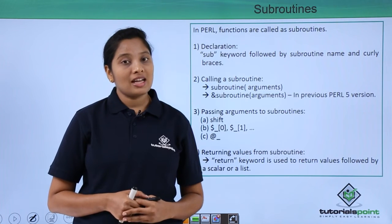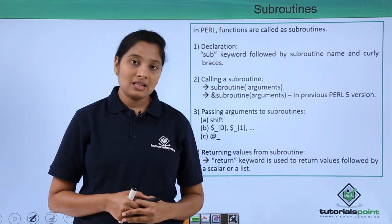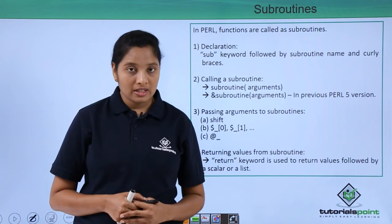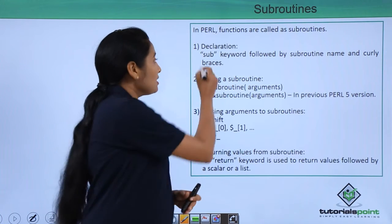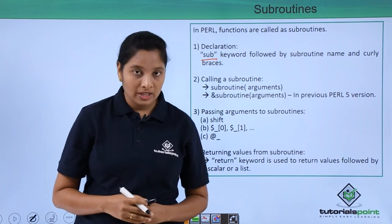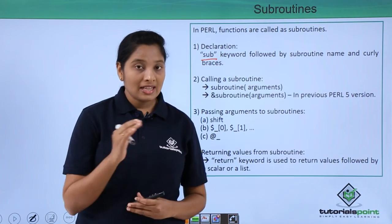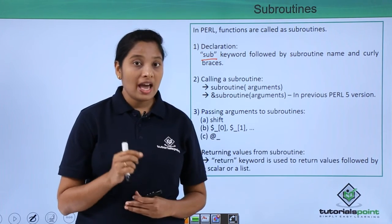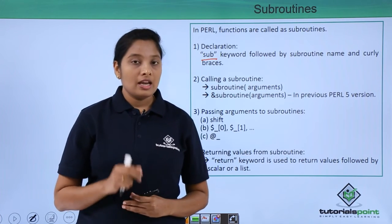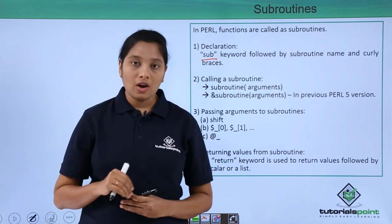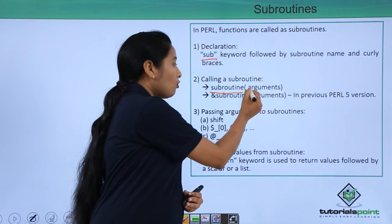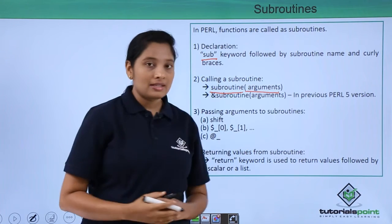In Perl, functions are termed as subroutines. In order to declare a subroutine, just use a keyword called sub followed by the subroutine name. Inside the subroutine, the code has to be enclosed in curly braces. In order to call a subroutine, just give the subroutine name followed by the arguments in brackets.